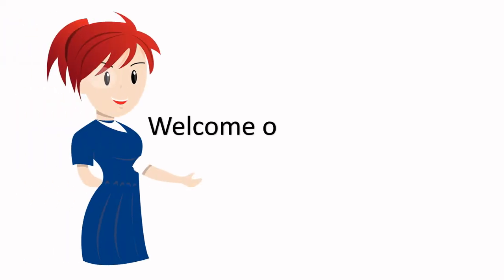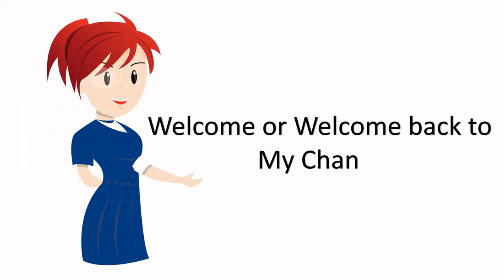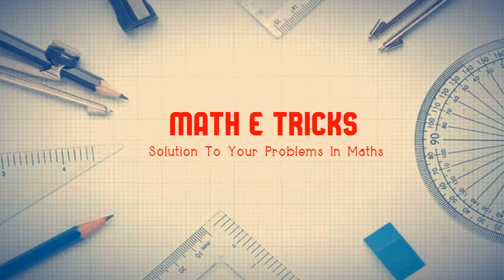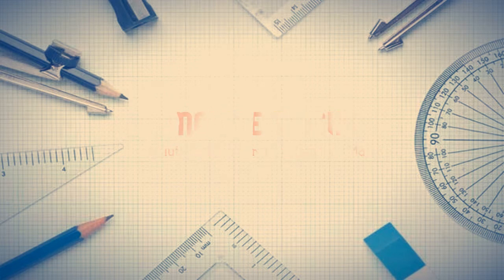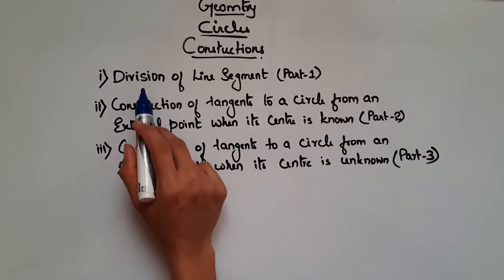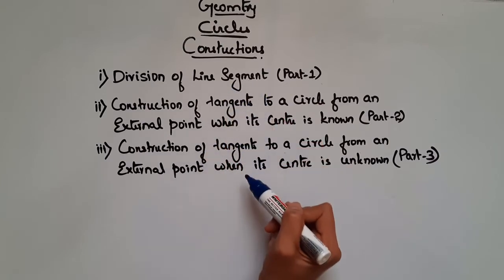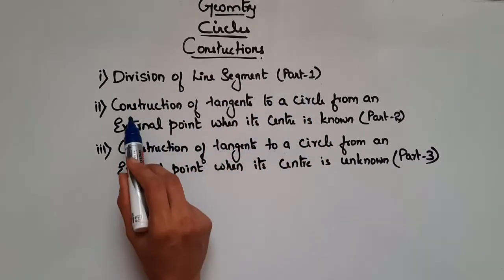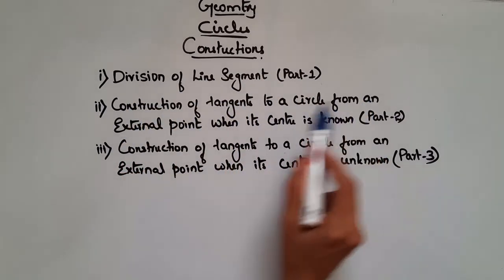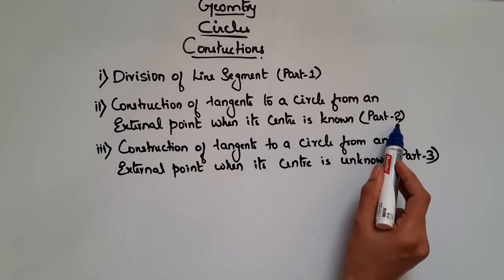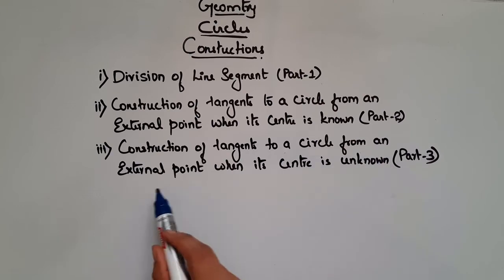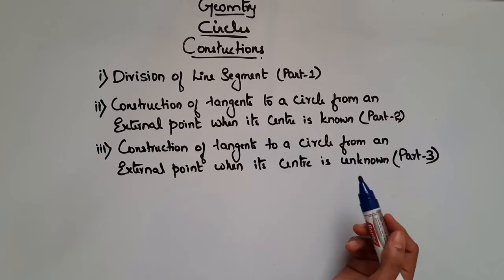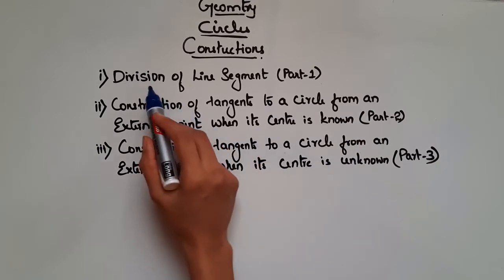Hi guys, welcome or welcome back to my channel. Before going to division of line segment, let me tell you what topics we are going to cover in this chapter on constructions. We have division of line segment in part 1, construction of tangents to a circle from an external point when its center is known in part 2, and when its center is unknown in part 3. In this video, we will see division of line segments.